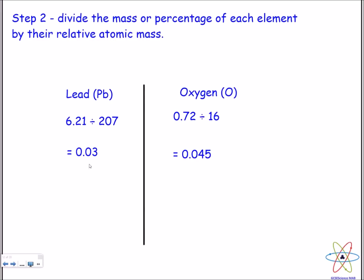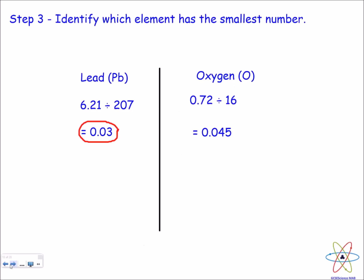So we get these numbers: we've got 0.03 for lead and 0.045 for oxygen. You then got to identify which one of these two numbers is the smallest, that's quite straightforward, it's lead.